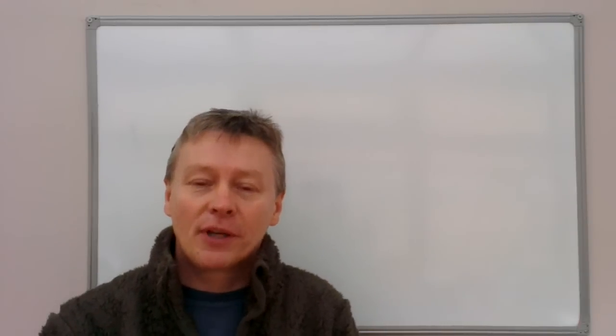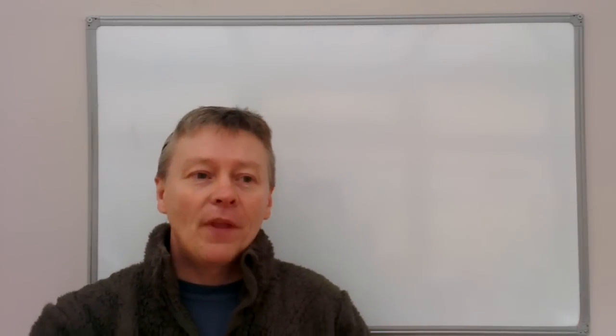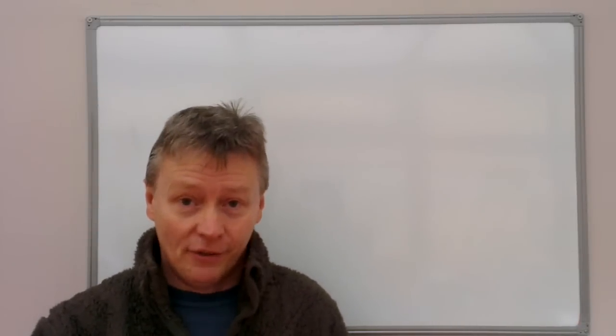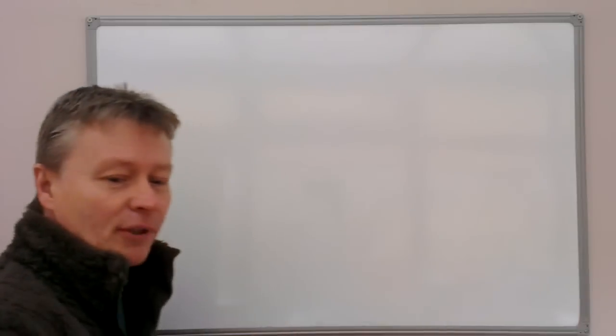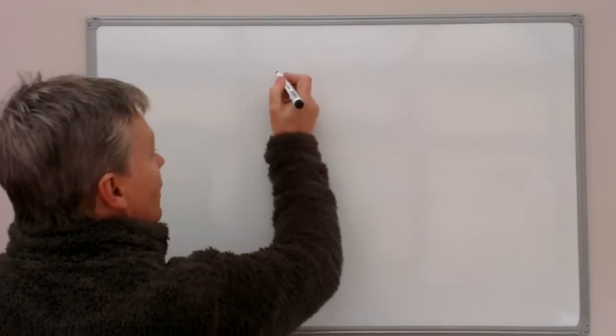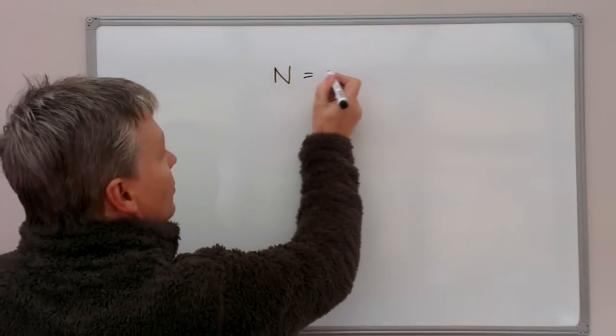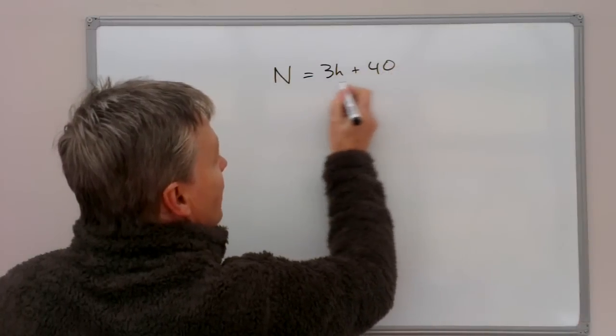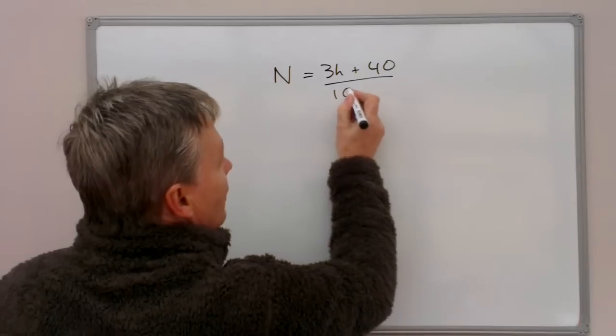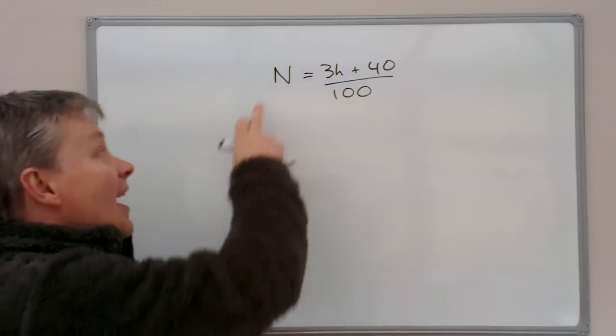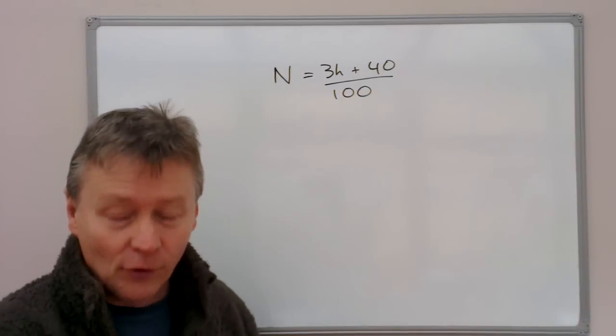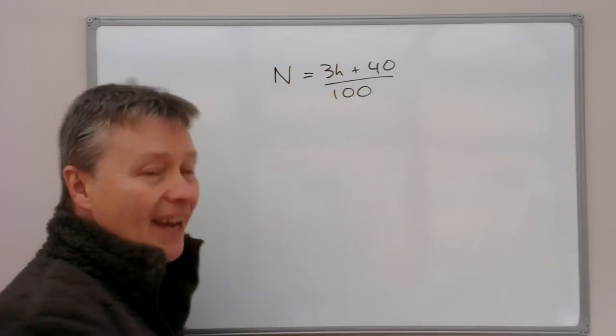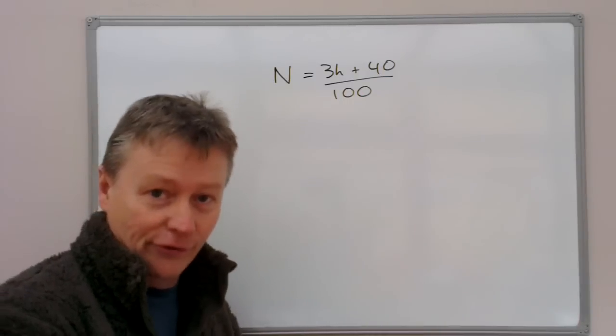So what we're going to do is we're going to make a different part of the equation, what's called the subject of the formula. So a typical formula would be something like this. We've got N equals 3H plus 40 divided by 100. Now at the moment N is the subject of the formula. However, the question asks us to make H the subject of the formula.